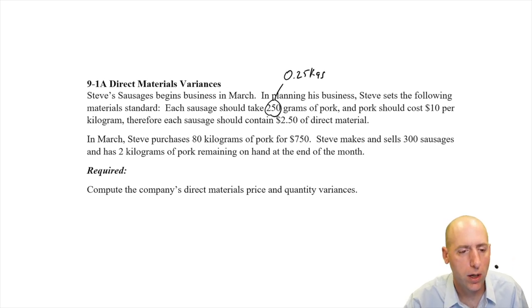Of pork, and pork should cost $10 per kilogram. Therefore, each sausage should contain $2.50 of direct material.